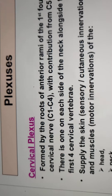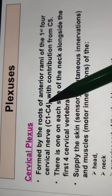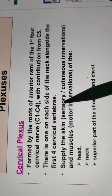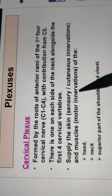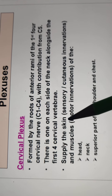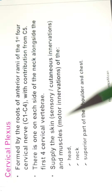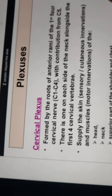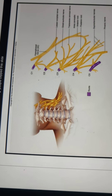The cervical plexus is formed by C1 to C4, with contribution of C5. It has both sensory and motor functions, producing sensory and motor innervation to the skin and muscles of the head region, neck region, and the superior parts of the shoulder and chest. That is the main function of the cervical plexus.